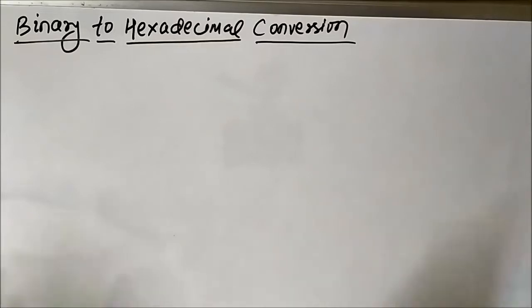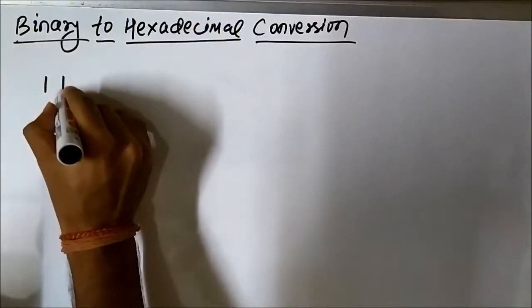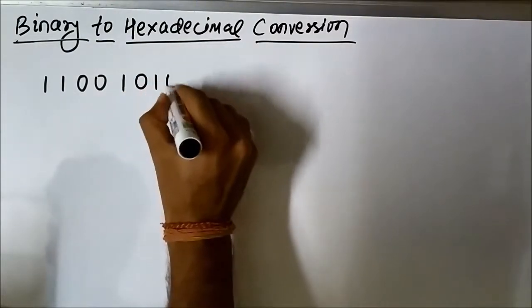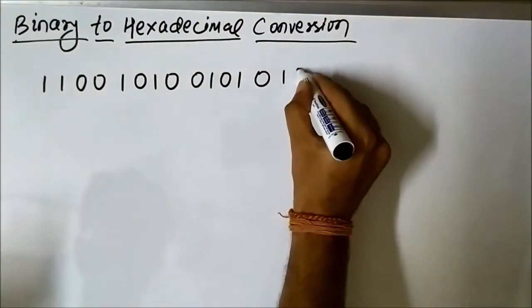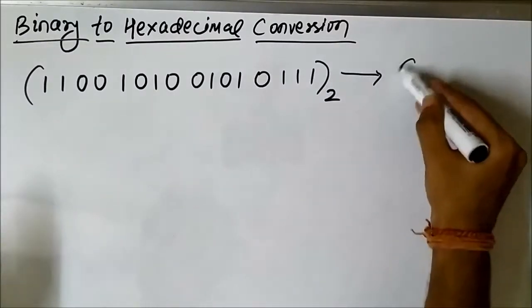We will directly go for the conversion process and study it with the help of some examples. Let us first take a number: 1 1 0 0 1 1 0 1 0 1 0 1 1 0 1 0 1 1 0 0 1 1 1. This is a big binary number and we have to convert it into hexadecimal form.